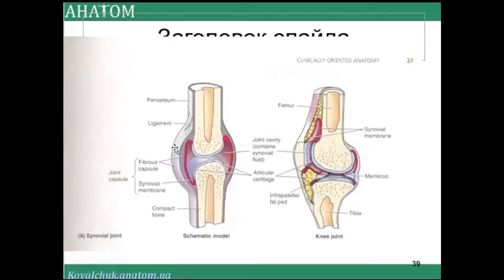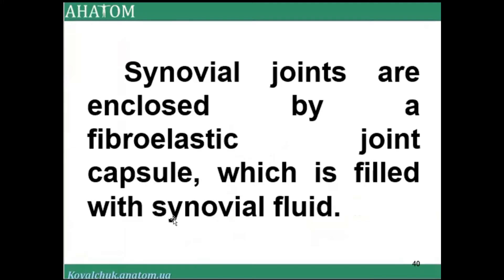The fibroelastic joint capsule acts as an enclosure for the articular cavity. The cavity contains synovial fluid which connects the articular surfaces of the bones. If more than two bones are present, the capsule accommodates them all. Synovial joints are enclosed by a fibroelastic joint capsule filled with synovial fluid.